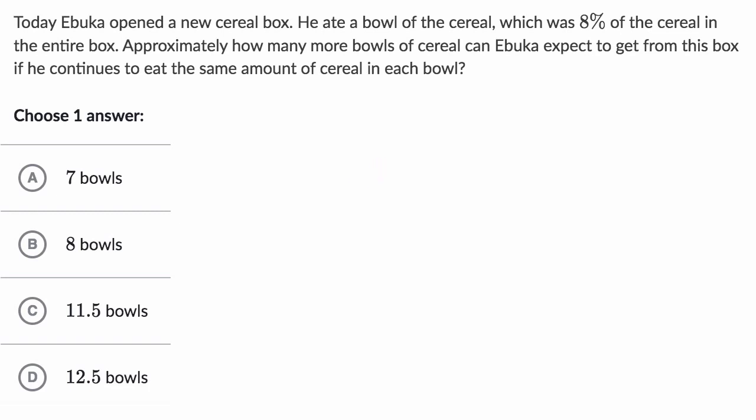There's several ways that you could approach this. You could say, all right, the box starts off with 100% of the cereal. Then, in that first bowl, he eats 8%, and so you're left with 92% of the original new box amount of cereal.